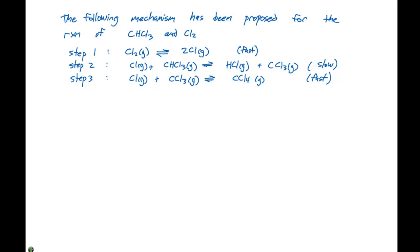The following mechanism has been proposed for the reaction of CHCl3 and Cl2. We have three steps here. Step 1: Cl2 in equilibrium with 2Cl, which is a fast step. Step 2: Cl gas plus CHCl3 gas in equilibrium with HCl gas plus CCl3 gas, which is slow. Step 3: Cl gas plus CCl3 gas in equilibrium with CCl4 gas.